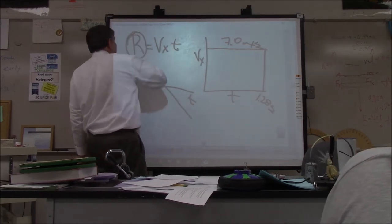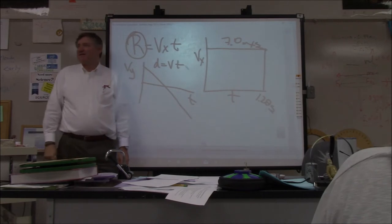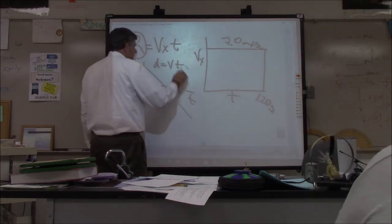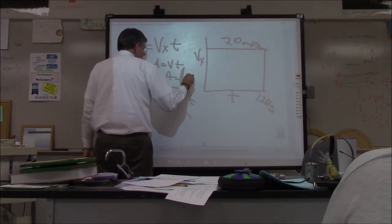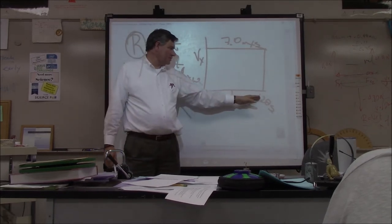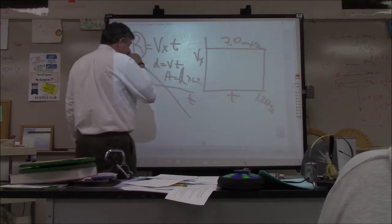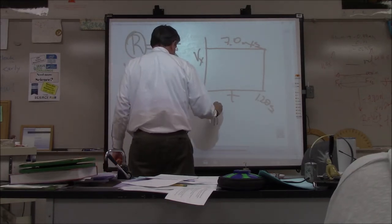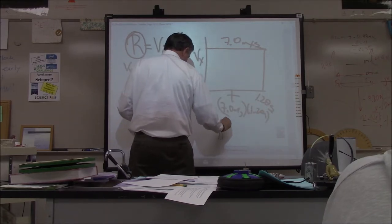Range is just distance equals velocity times time — a fancy name for that. Vx is 7.0 meters per second, total time is 1.2 seconds. You can view it as velocity times time, or as the area of a rectangle on the horizontal velocity-time graph: length 1.2 seconds times height 7.0 m/s. Take 7.0 times 1.2 — you get 8.4 meters. At one second, you've traveled 7 meters horizontally and are 1 meter high.